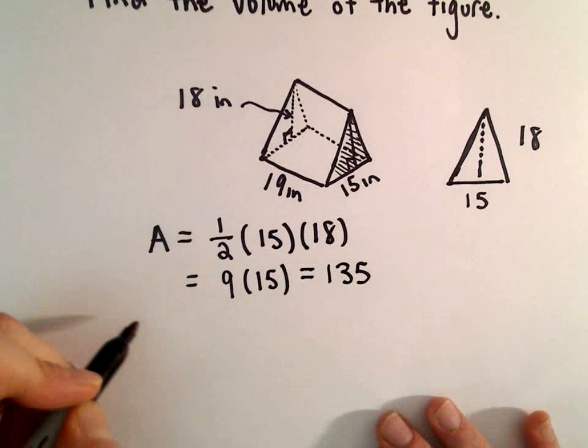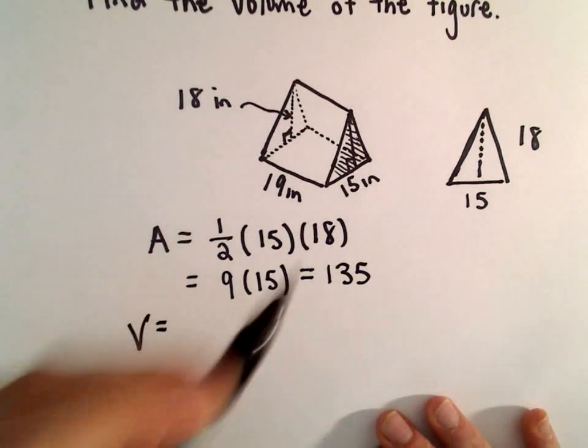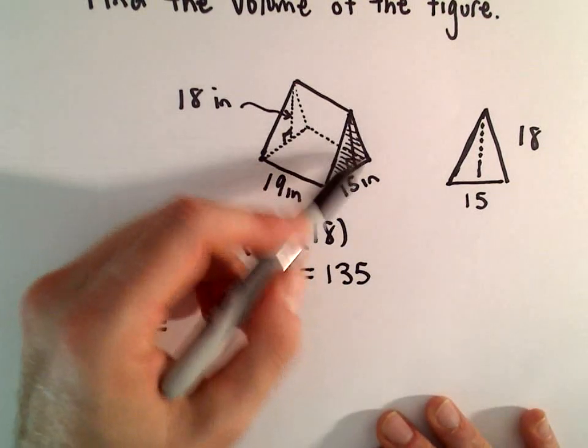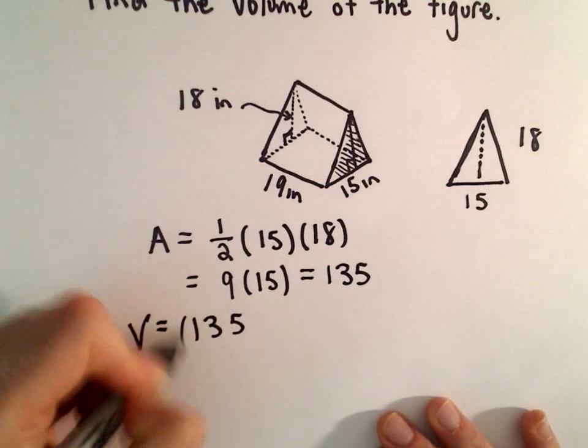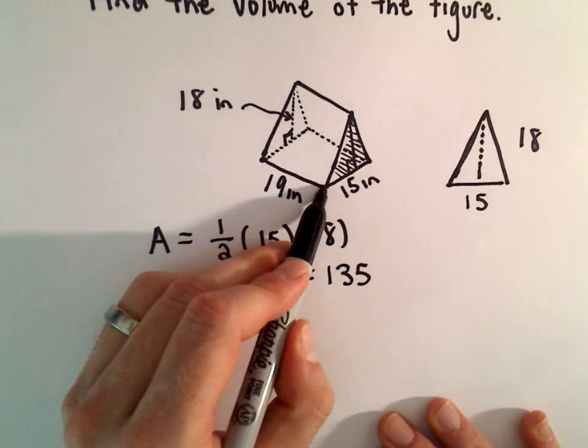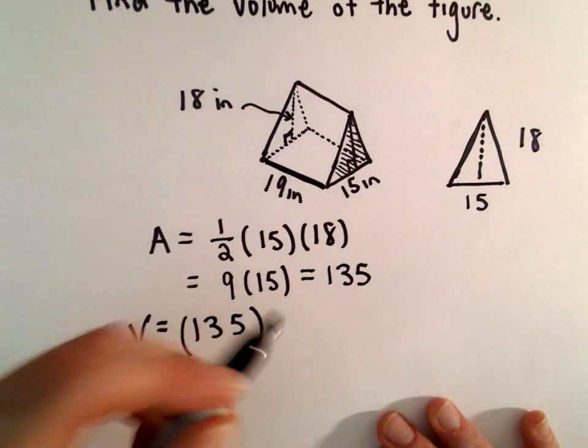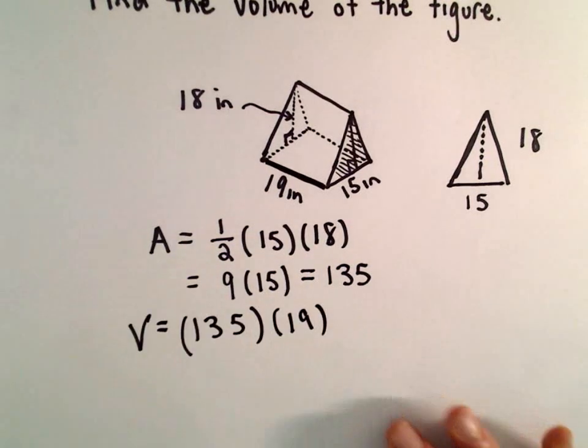So for the volume, we just need to take the area of one of the faces, which is 135, and then multiply it by the other dimension, which will be 19.